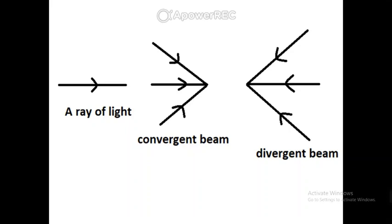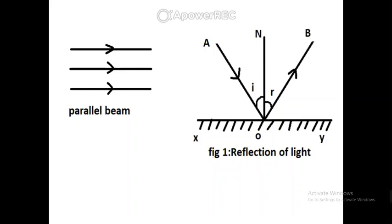Now, a parallel beam means a collection of parallel rays of light, and that is called a parallel beam. In figure one, AO is the incident ray which is incident on any surface XY.